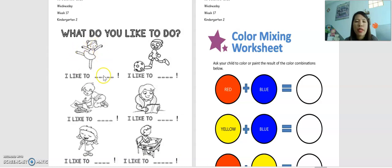Now, what do you like to do? The first picture here is 'I like to dance.' I like to play or kick a ball. I like to draw a picture. I like to read a book. I like to sing a song.